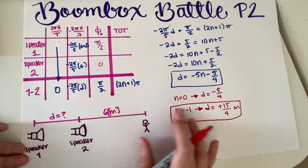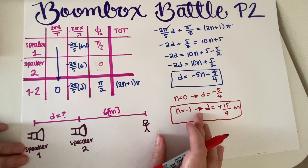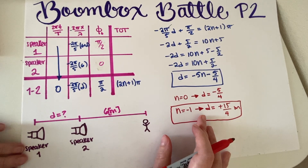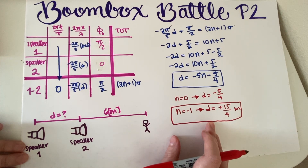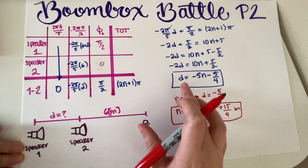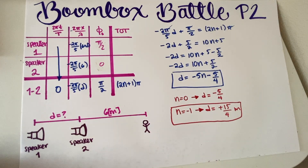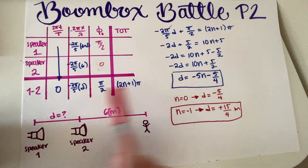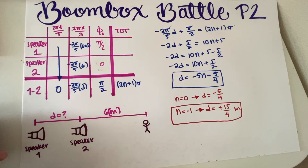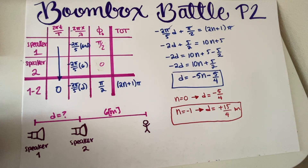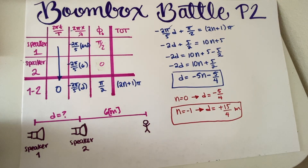Whether your final answer uses n = -2 or even n = -1000, that's fine — there are infinitely many distances that work. Just make sure you get to the general equation and then state one final answer. Anyway, this is the end of this problem. I hope you found this video useful. If you did, please make sure to leave a like — it really helps our channel, and I'll see you in the next video.